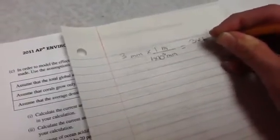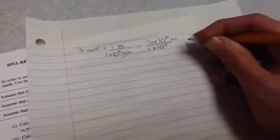Three millimeters. I'm going to multiply it by the conversion: 1 meter over 1 times 10 to the third millimeters. The 3 doesn't have an exponent, so it's 3 times 10 to the 0. Millimeters cancel. I'm left with meters divided by 1 times 10 to the third. Dividing coefficients: 3 divided by 1 is 3. Subtracting exponents: 0 minus 3 is negative 3. So 3 times 10 to the negative 3 meters. This is the height of my coral.